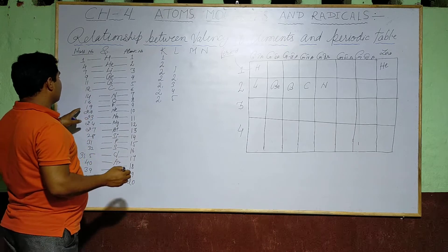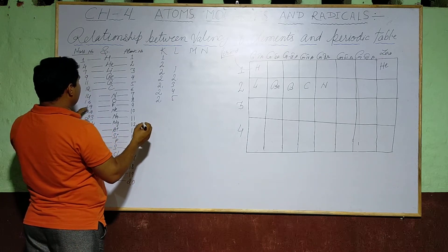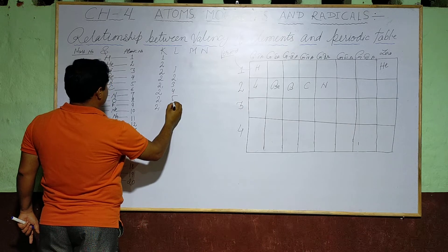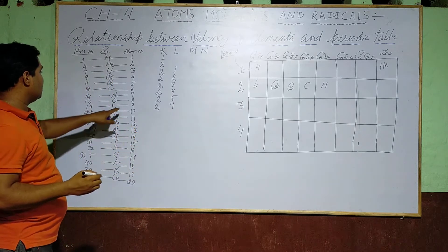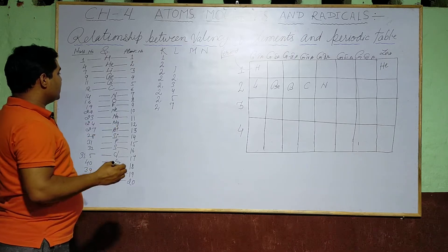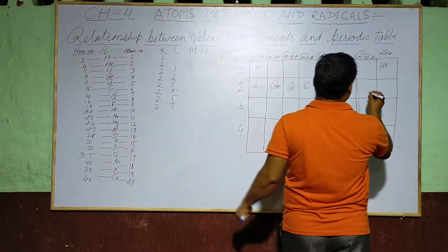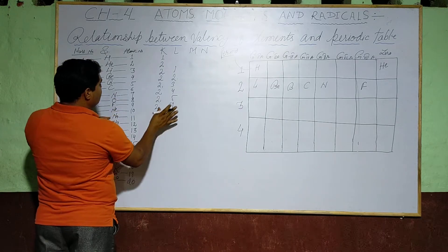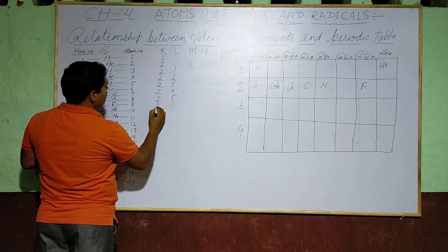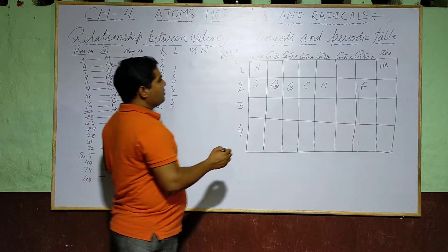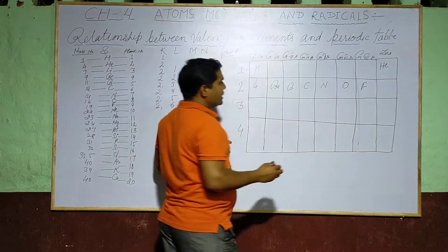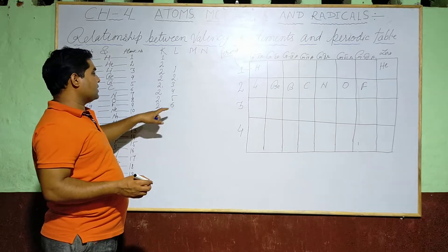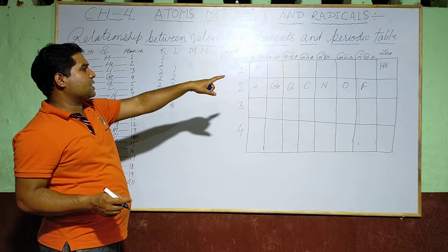Fluorine has atomic number 9, configuration 2 and 7, so it is placed in Group 7A. Oxygen has atomic number 8, configuration 2 and 6 — the outermost valence electron is 6 — so Oxygen is placed in Group 6A. Fluorine with 7 valence electrons goes to Group 7A. Both are in Period 2.